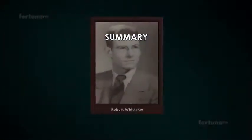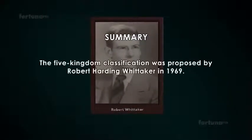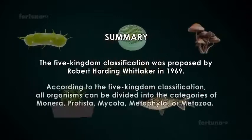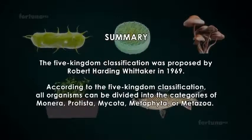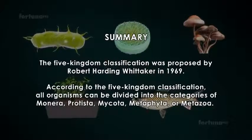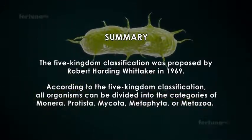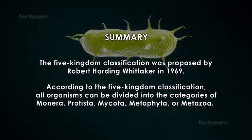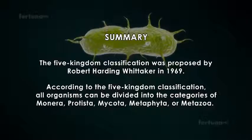Summary: The Five Kingdom Classification was proposed by Robert Harding Whittaker in 1969. According to this classification, all organisms can be divided into the categories of Monera, Protista, Mycota, Metaphyta, and Metazoa.